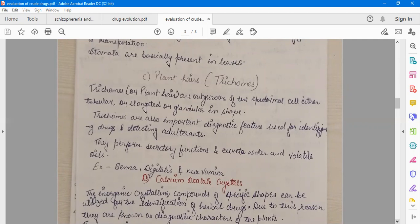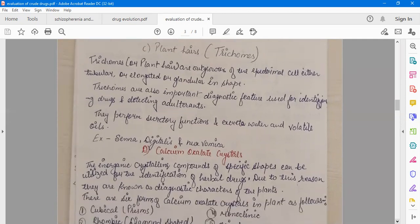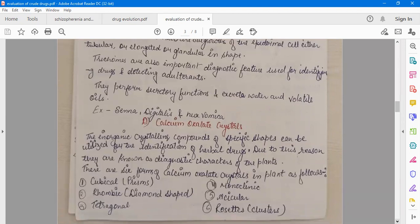Trichomes are also important diagnostic features used for identifying drugs and detecting adulterants. They perform secretory functions and secrete water and volatile oils. Examples are senna, digitalis, and nux vomica. Another factor is calcium oxalate crystals, which are the basic source of calcium in the plant. The inorganic crystalline compounds of specific shapes can be utilized for identification of herbal drugs. There are six forms of calcium oxalate crystal in plants: cubical, rhombic, tetragonal, monoclinic, acicular, and rosettes.